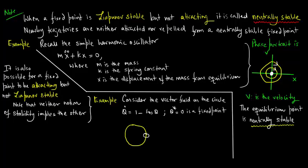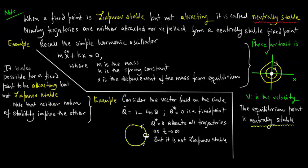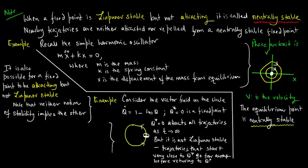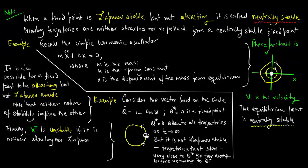Here theta star equals 0 is a fixed point. We plot the vector field, and theta star equals 0 attracts all trajectories as t tends to infinity, but it is not Lyapunov stable. Trajectories that start very close to theta star actually go far away before returning to theta star. Finally, x star is unstable if it is neither attracting nor Lyapunov stable.